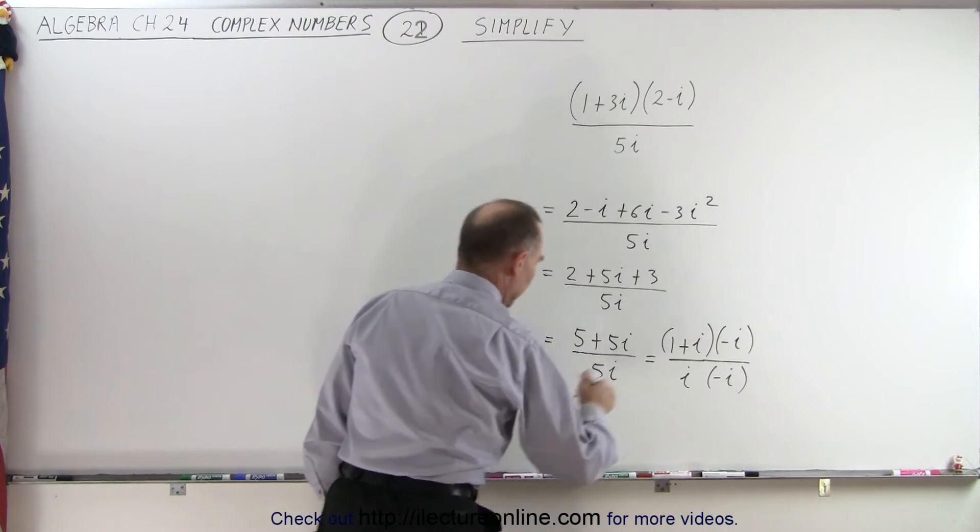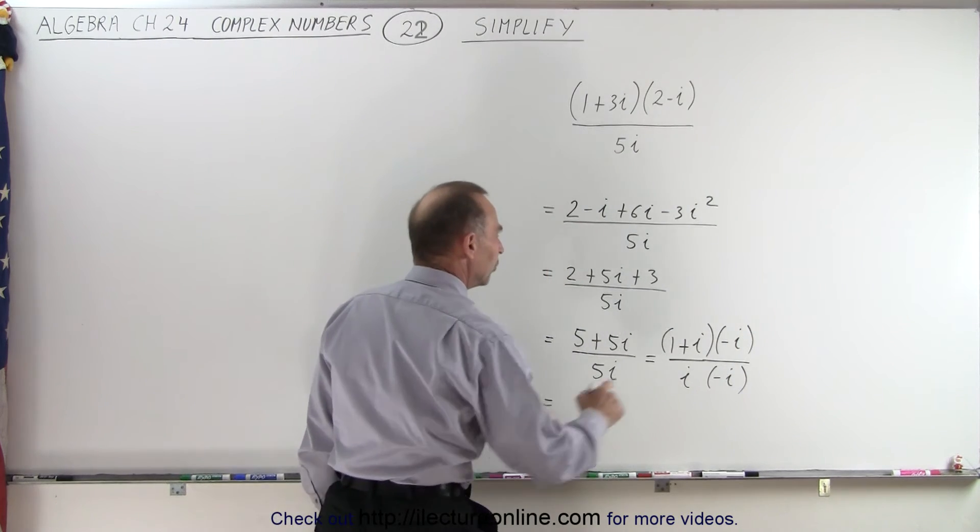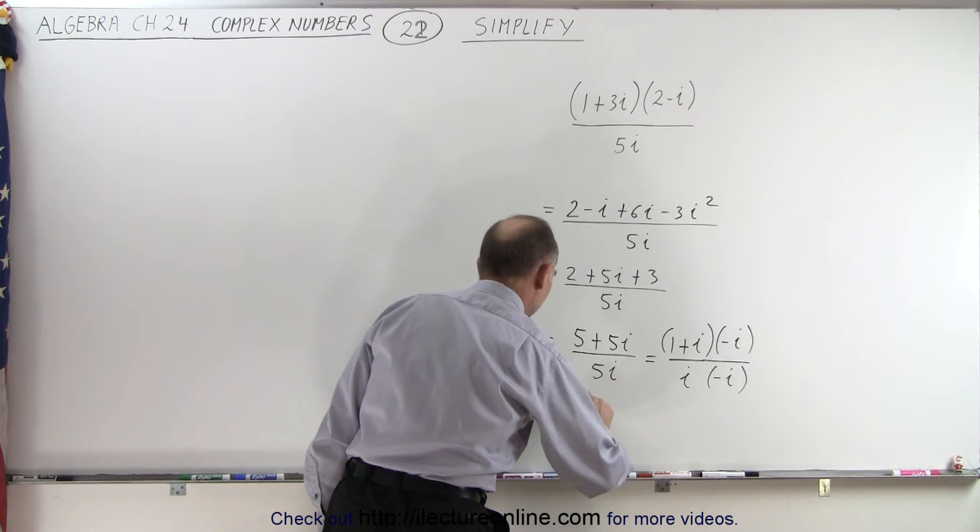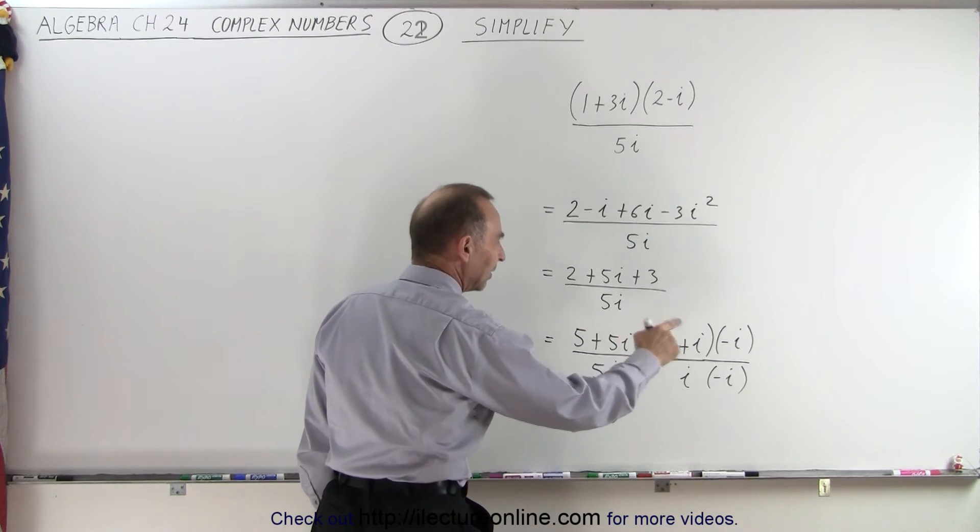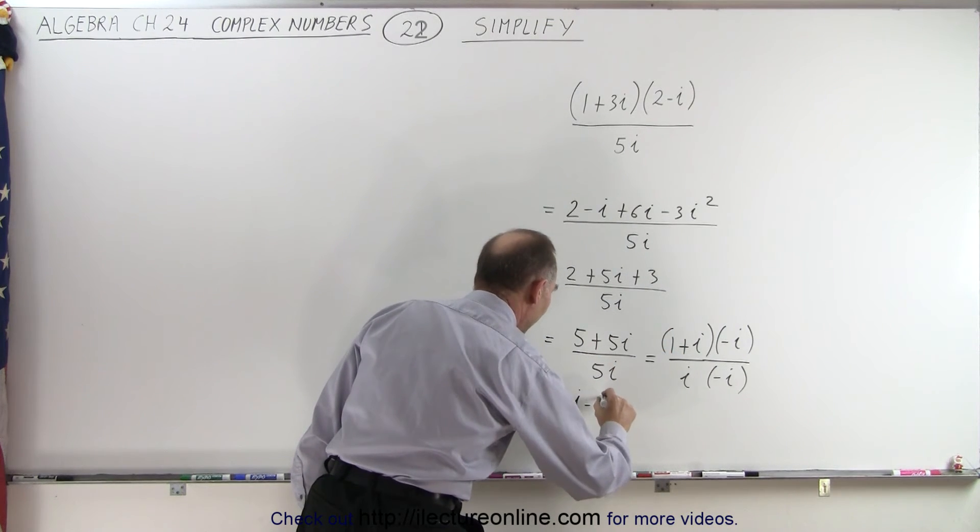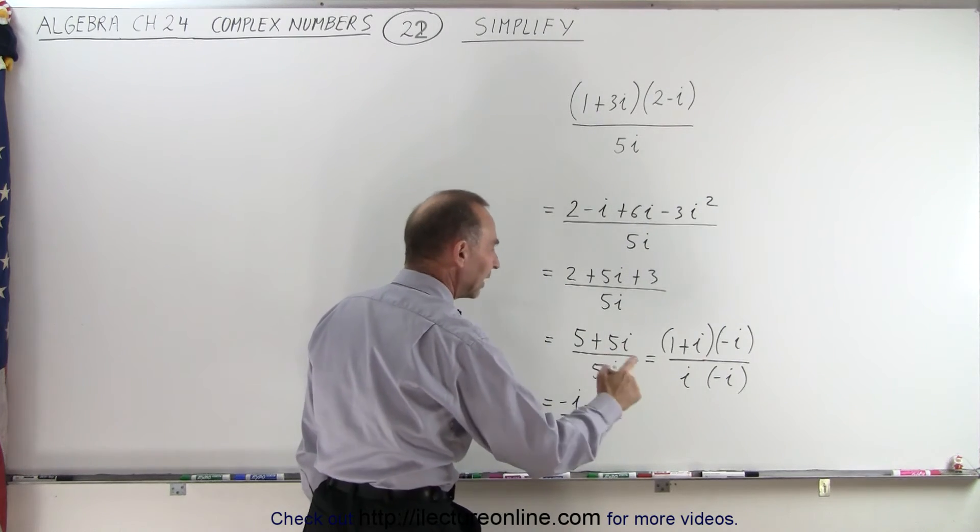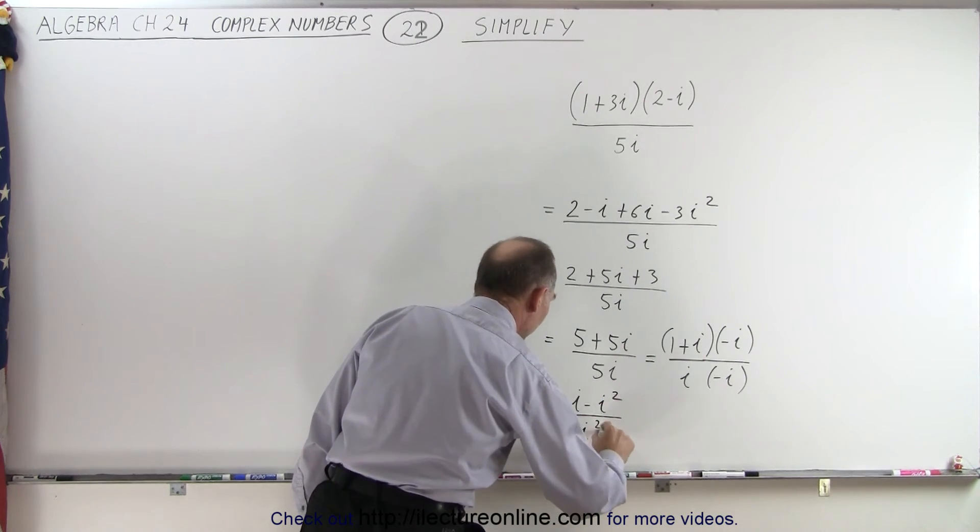So when I multiply the numerator, I get the following. So this is equal to 1 times negative i, which is negative i, and i times the negative i is a negative i squared. And in the denominator, I have an i times the negative i, which is a negative i squared.